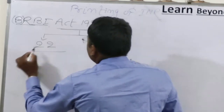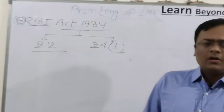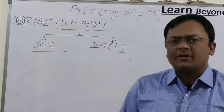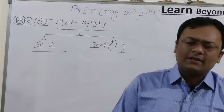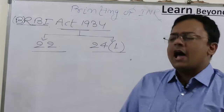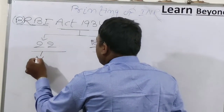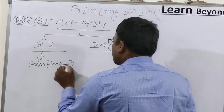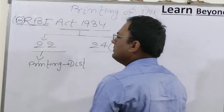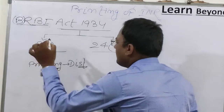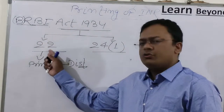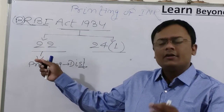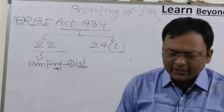Under Section 22 of RBI Act 1934, the Government of India has given RBI complete responsibility from printing of INR to its distribution — that is, delivering currency to banks. This is called distribution and printing. The act is RBI Act 1934, not the Banking Regulation Act 1949. That is Reserve Bank of India Act 1934.